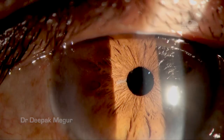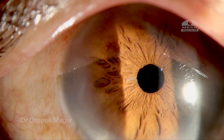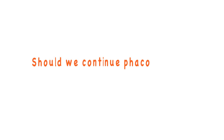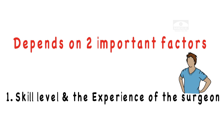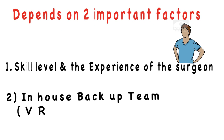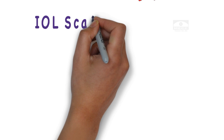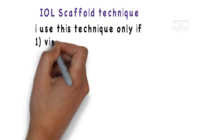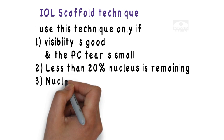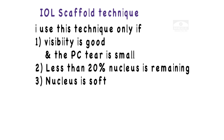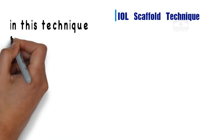A commonly debated question: should we continue phacoemulsification in the presence of a PC tear? It depends on two important factors — the skill level and experience of the surgeon, and the availability of an in-house backup team to manage nucleus drop. I prefer to use the IOL scaffold technique if three distinct criteria are fulfilled: visibility is good, the PC tear is small (less than 20% nucleus remaining), and the nucleus is very soft.